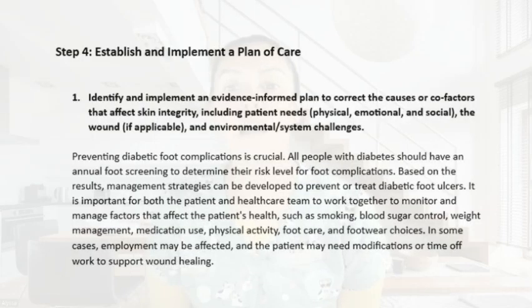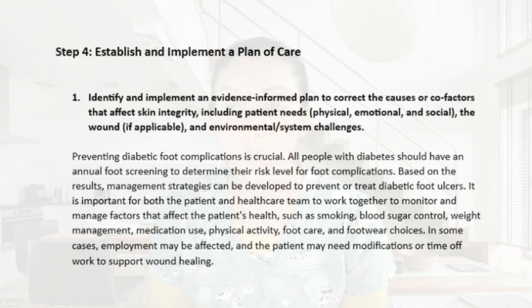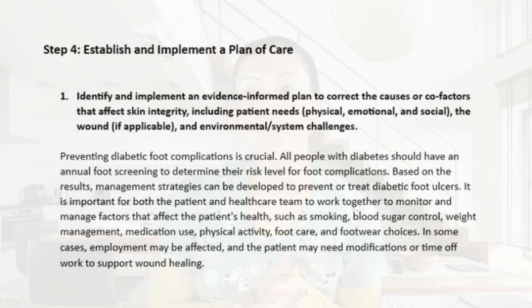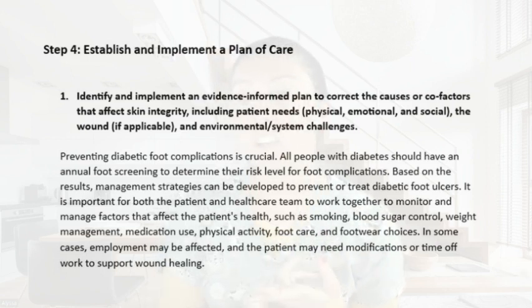Step four is establishing and implementing a plan of care — identifying and implementing an evidence-informed plan to correct causes or cofactors affecting skin integrity. Preventing diabetic foot ulcers is absolutely critical; patients should be going in on a yearly basis to determine their risk levels. It's important for both the patient and healthcare team to work together to monitor and manage factors such as smoking, blood sugar control, weight management, medications, physical activity, foot care, footwear, nutrition, revascularization, and pain control.